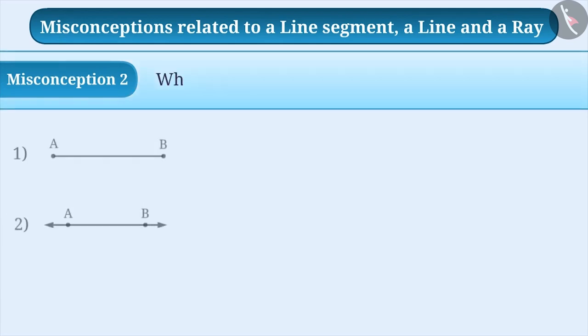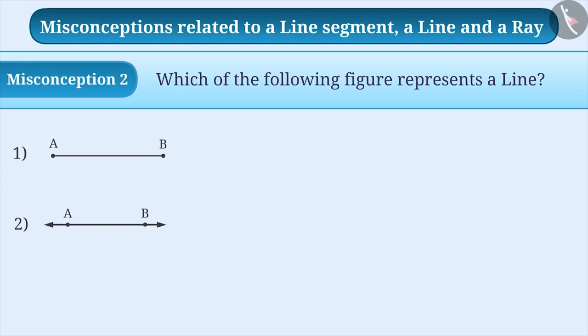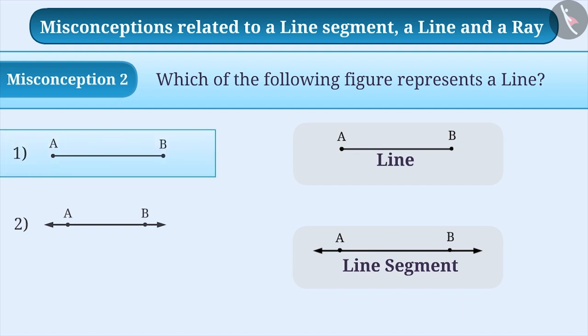Misconception 2: Which of the following figure represents a line? Sometimes, students find it difficult to understand the difference between a line segment and a line. They think that a line can be represented by putting dots on both ends and a line segment is represented by putting arrows on both ends. With this understanding, children think that option 1 represents a line. So, they choose option 1 as the answer, which is incorrect.